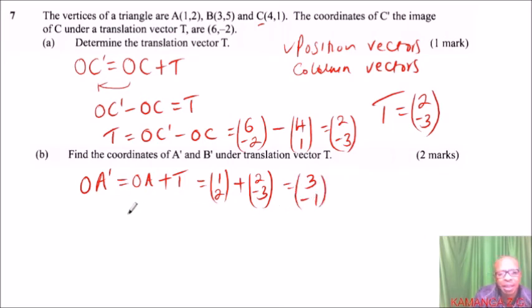So, because this is now the position vector of OA', which is (3,-1), to get the coordinates, you just write that in linear form. So, A' will be (3,-1).